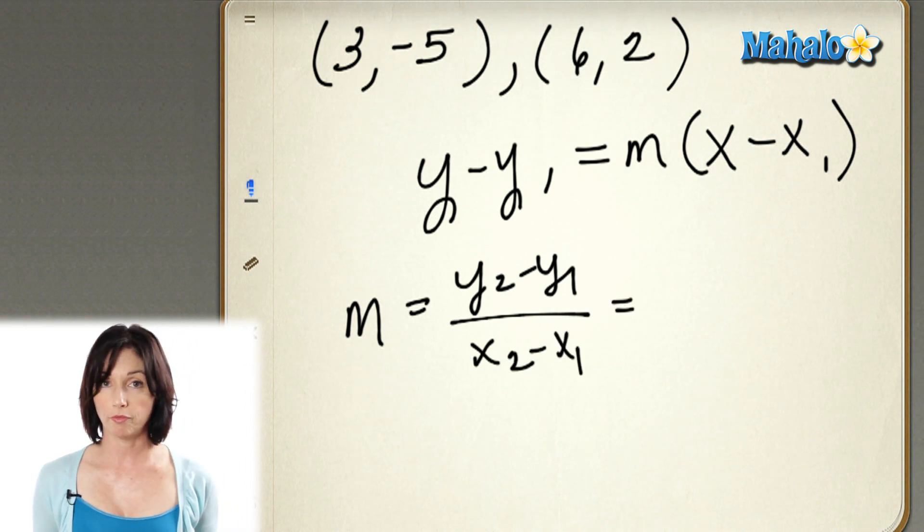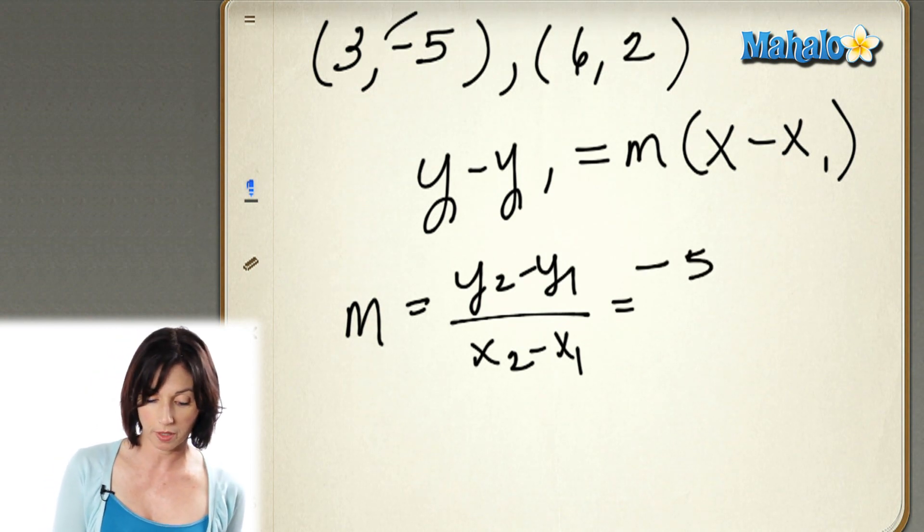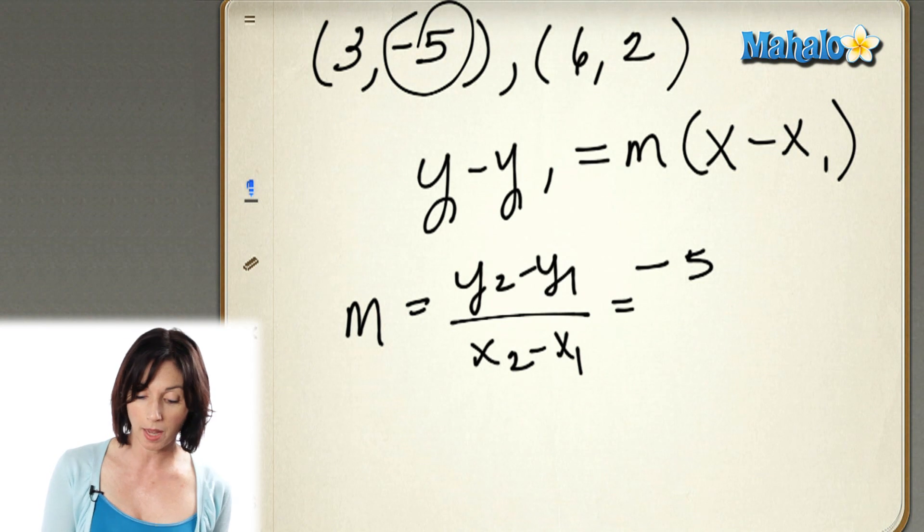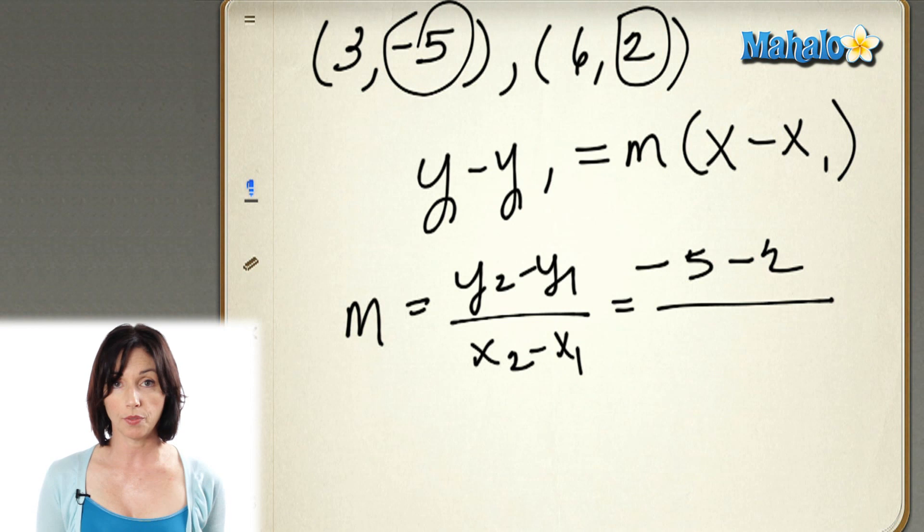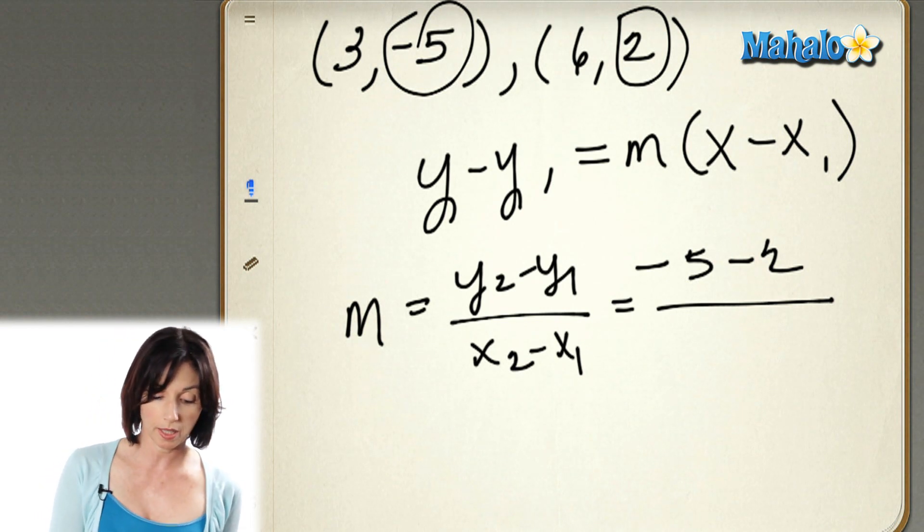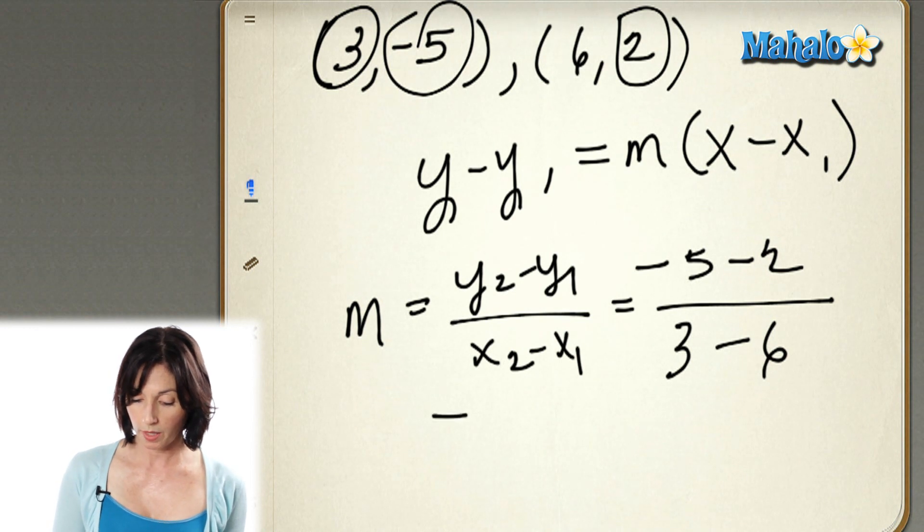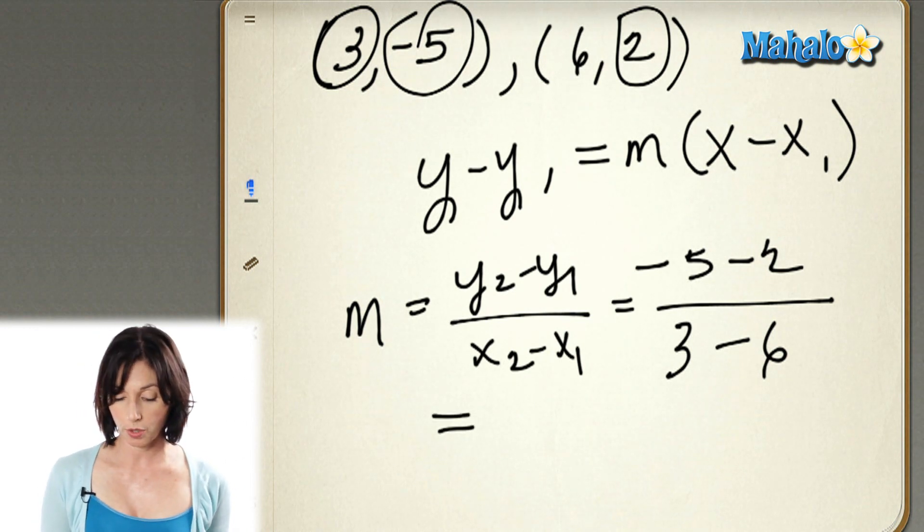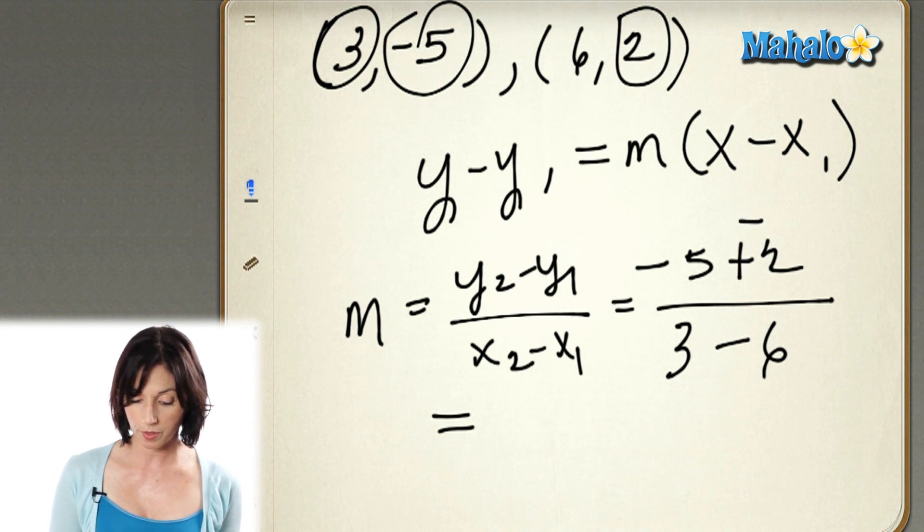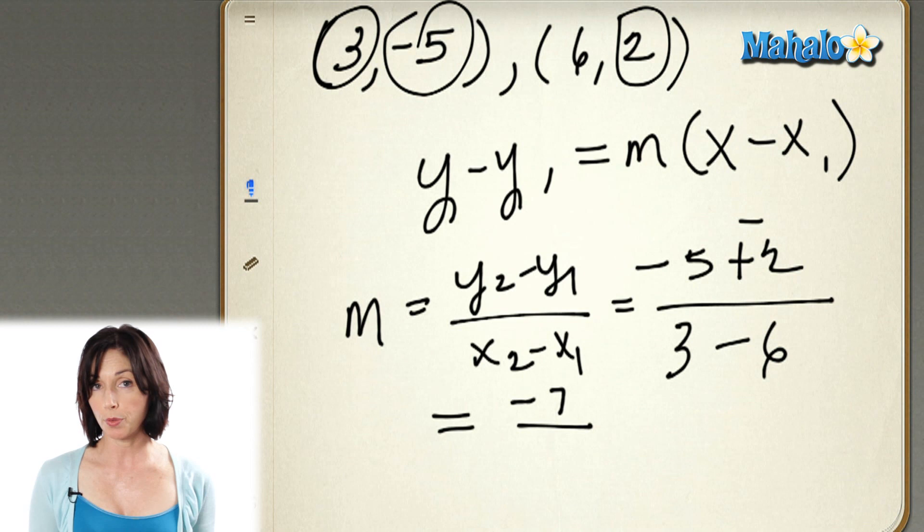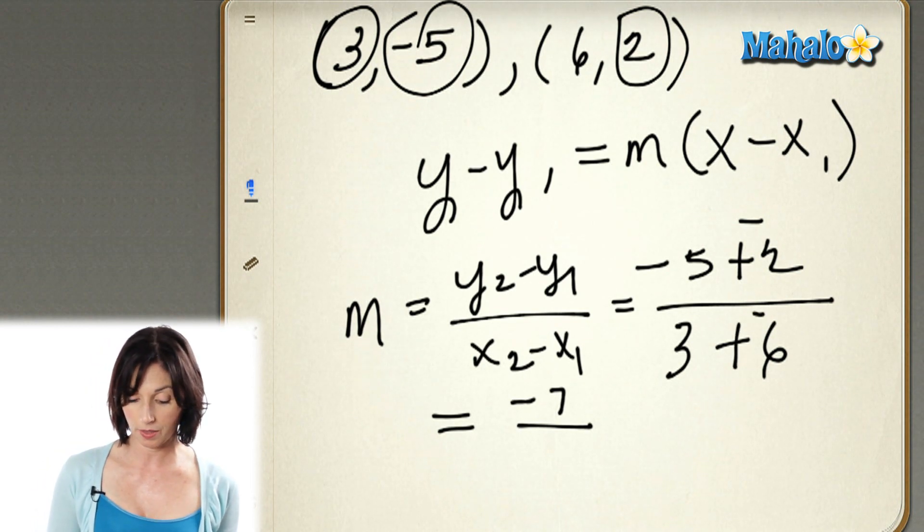So I'm going to find the difference in my y coordinates. On the top, I've got a negative 5. I'm using this one. And I have to subtract from my other y coordinate, which is 2. And then on the bottom, I have to take the difference in my x coordinates. So I'm going to take 3 minus 6. Okay, so negative 5 minus 2 is the same as saying negative 5 plus negative 2. So that's a negative 7. And on the bottom, I have 3 minus 6, which is the same as saying 3 plus negative 6. So I get a negative 3 on the bottom.